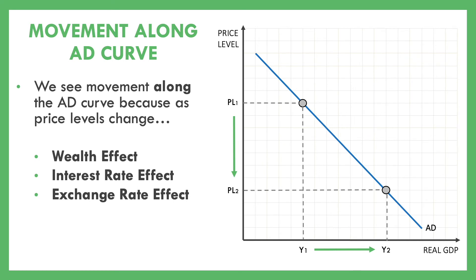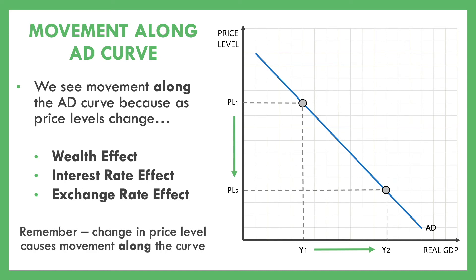The last explanation is the exchange rate effect. When prices get cheaper in our economy, net exports increase because people overseas notice that goods in the U.S. are now cheaper and want to buy more of them, increasing our exports. It also decreases our imports because people in the U.S. may start buying domestically instead of from overseas. All of these effects are caused by a change in the price level, which moves us along the curve — not a shift of the entire curve.